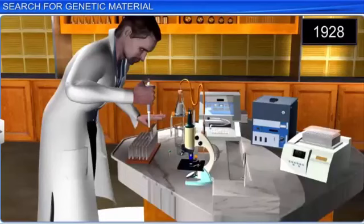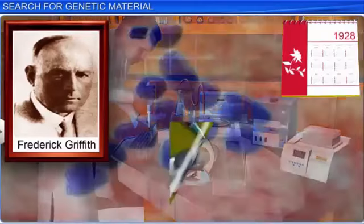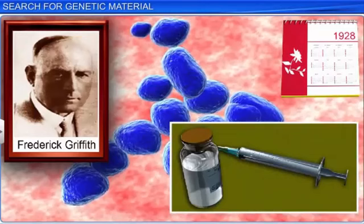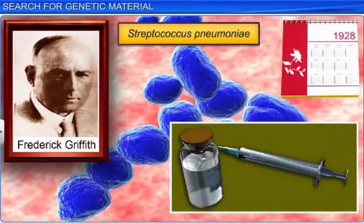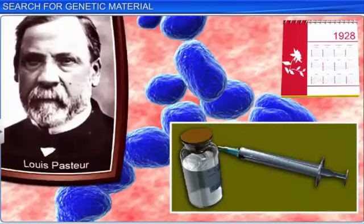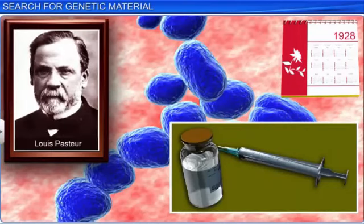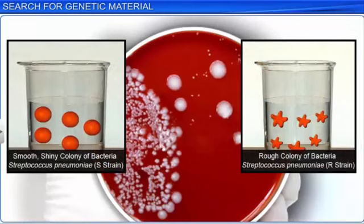However, in 1928, Frederick Griffith, a British scientist, conducted an experiment that accidentally demonstrated the transformation of genetic material in bacteria. In fact, Frederick Griffith was in the process of developing a vaccine against the bacteria Streptococcus pneumoniae that caused pneumonia, by inoculating the dead microbes, along similar lines of Louis Pasteur's experiments on vaccination.